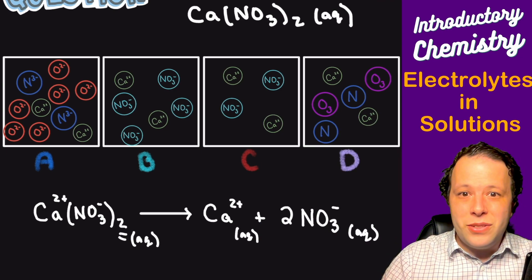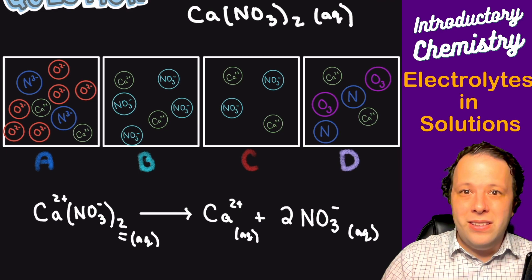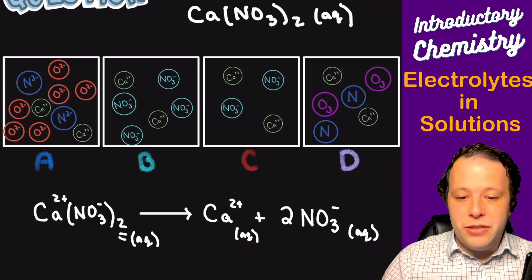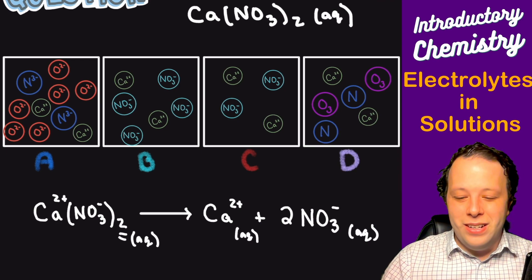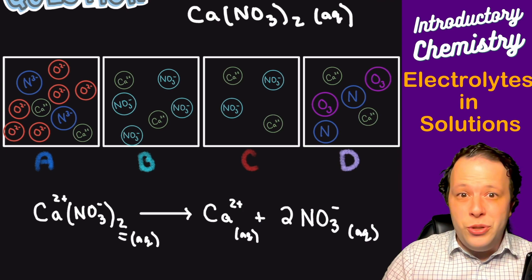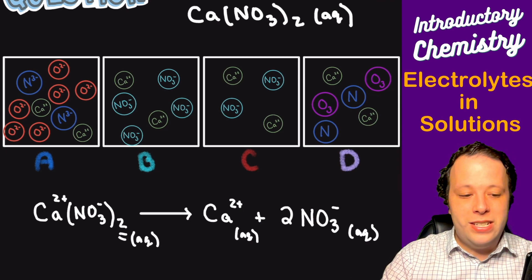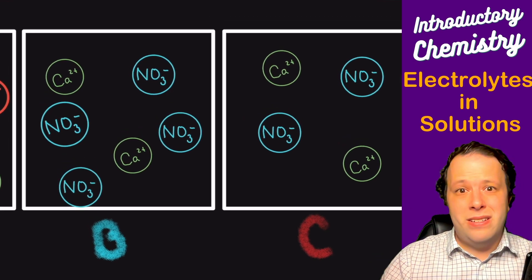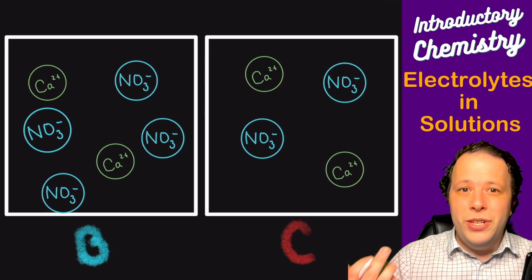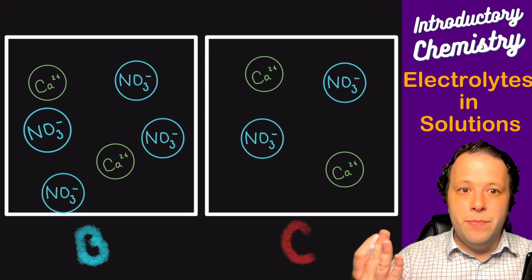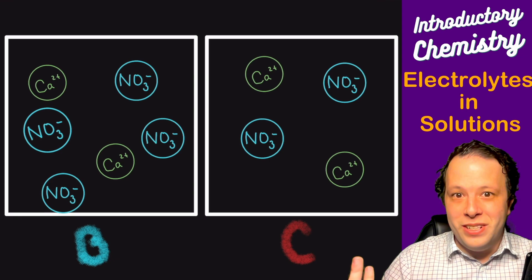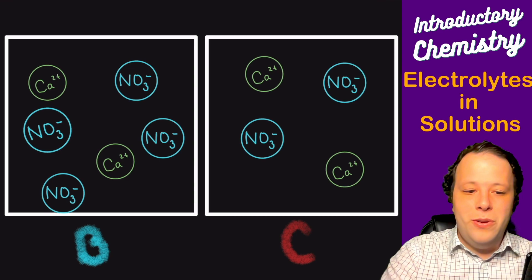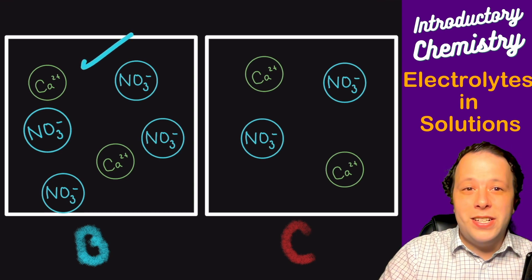So looking at this, what we should be seeing is something along a similar criteria here. It should be showing this nice balanced formula where you have this even look. So we should see a one to two ratio between calciums and nitrates. So where I'm kind of aiming here is in the middle. We see calciums and nitrates. So B and C. So which one is a one to two ratio? B has two calciums and four nitrates. That's one to two. And here we have two calciums and two nitrates. That's a one to one. So the most correct answer in this case is going to be B.